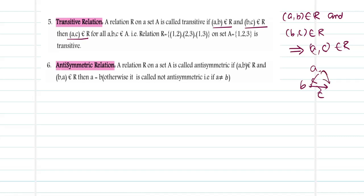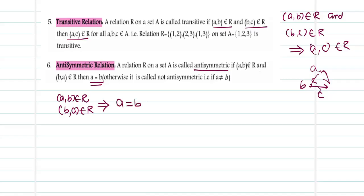Next, anti-symmetric relation. A relation R on a set A is anti-symmetric if (A, B) belongs to R and (B, A) belongs to R, then A has to be equal to B. Otherwise it is not anti-symmetric. That is, if A is not equal to B, you call it not anti-symmetric. So the criteria is: (A, B) belongs to R and (B, A) also belongs to R implies A equal to B.